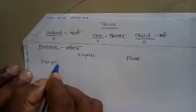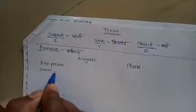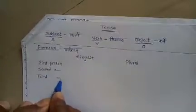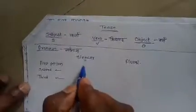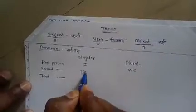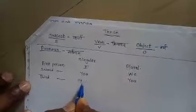First person, second person, third person — plural. First person: I, We. Plural: We. You. He, She, It.